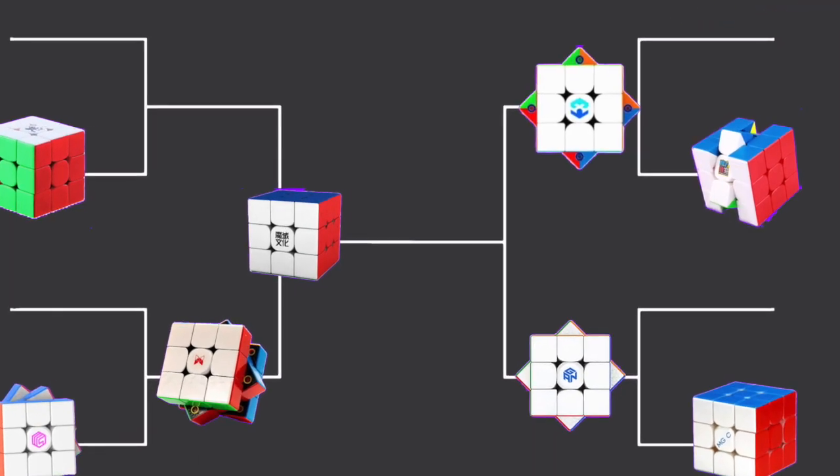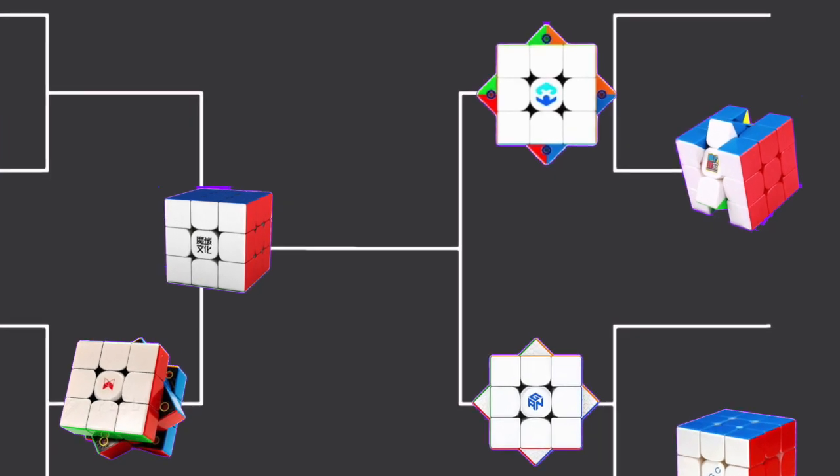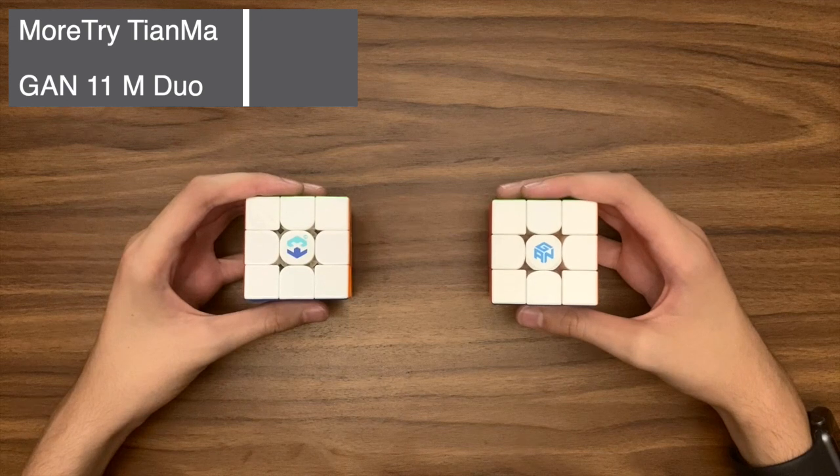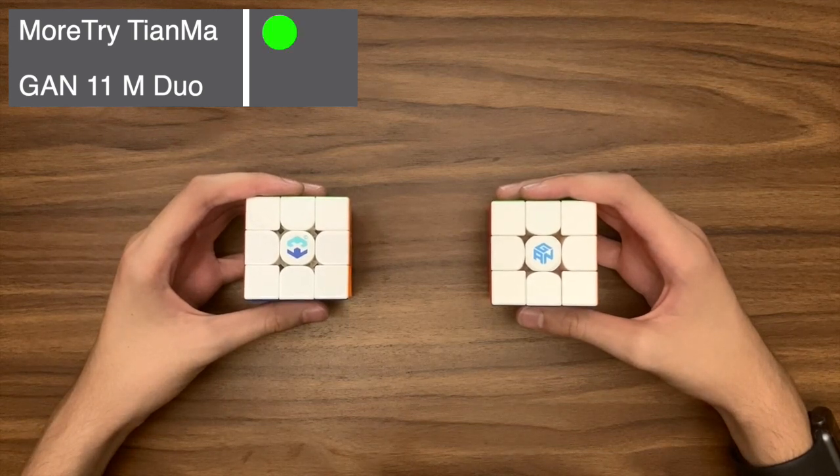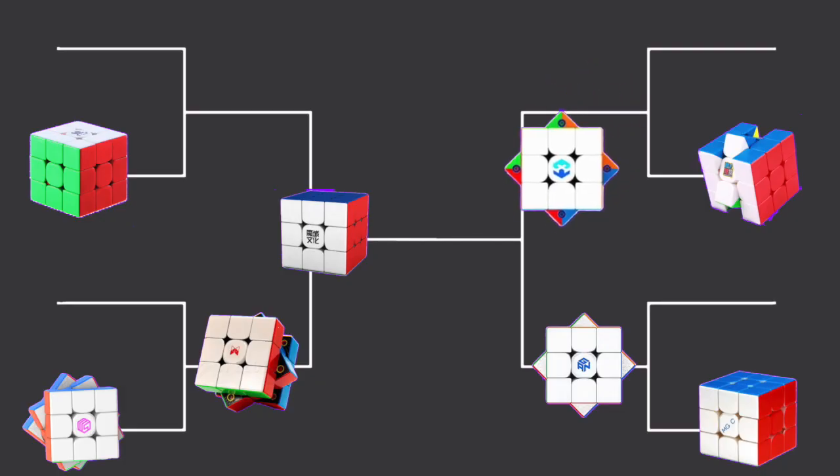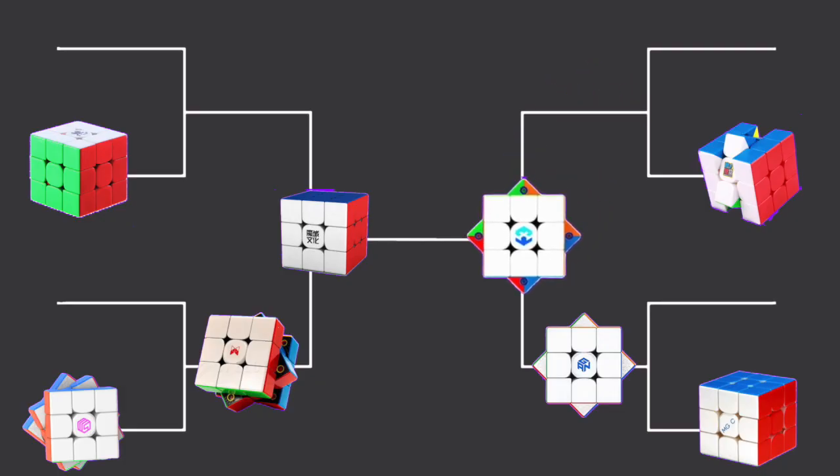Moving on to the second semi-final and we have the GAN 11M Duo versus Maltry Tyanmar. Because I want to boost that audience retention, I'm going to make this a speed round. Performance: Tyanmar. Customization: Duo. Value for money: Tyanmar. And with that speed round out of the way, the Maltry Tyanmar X3 moves on to the final.